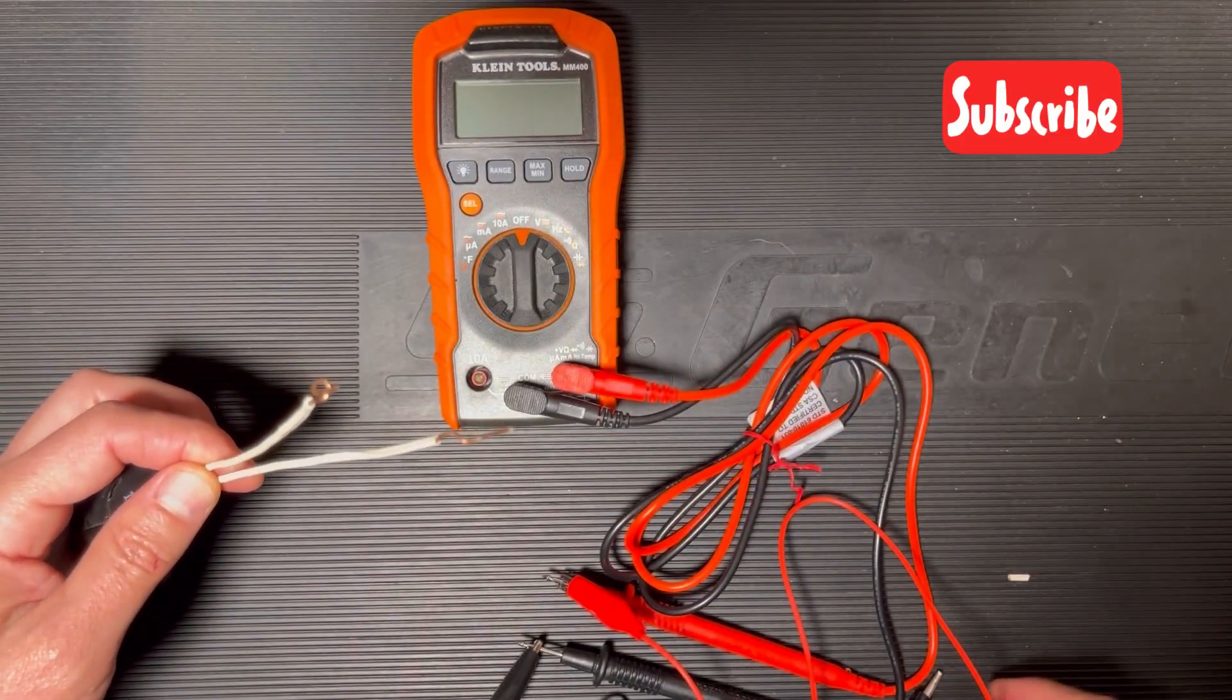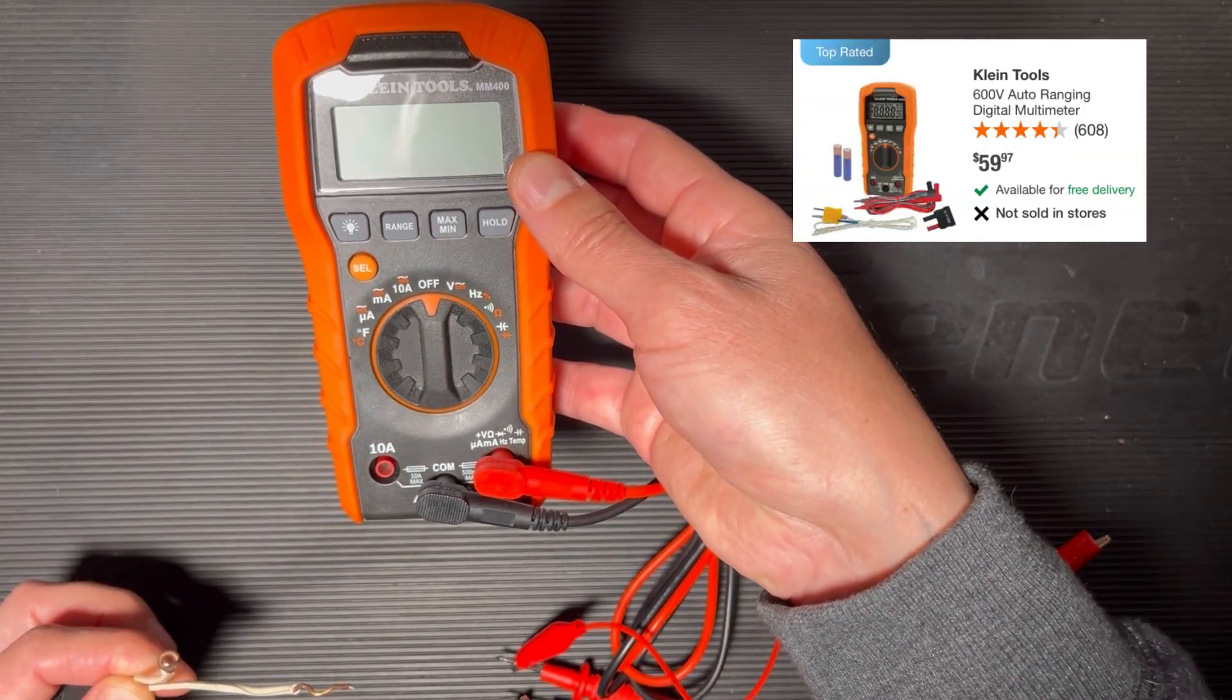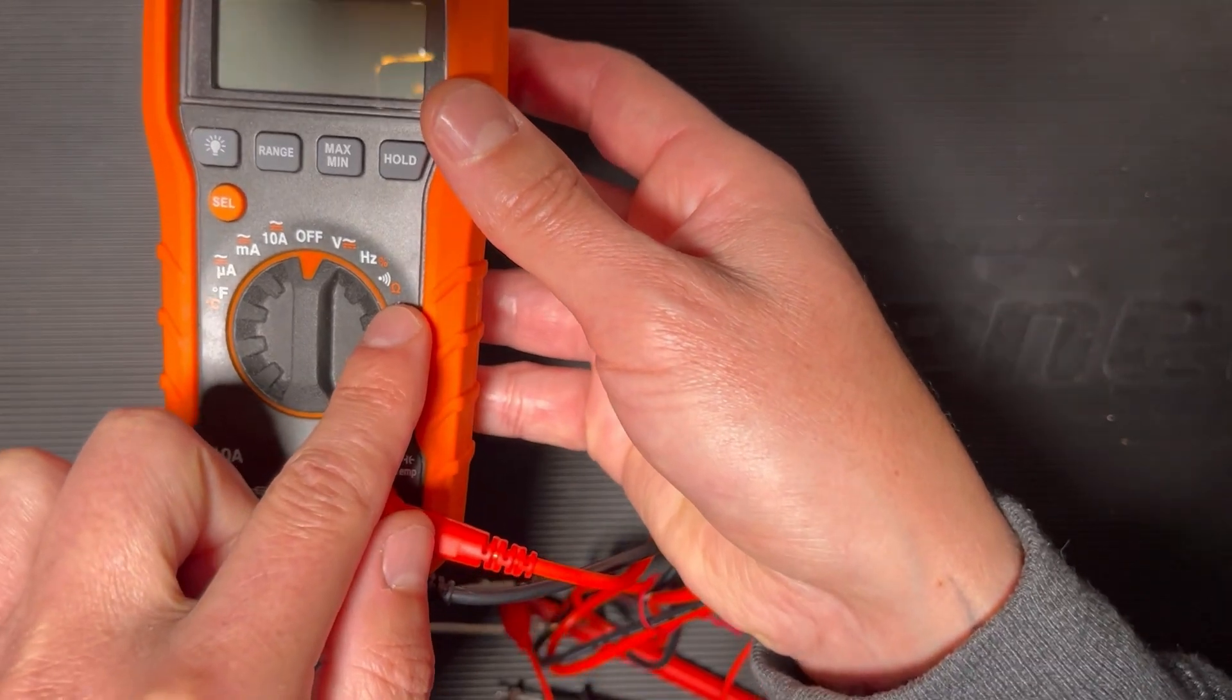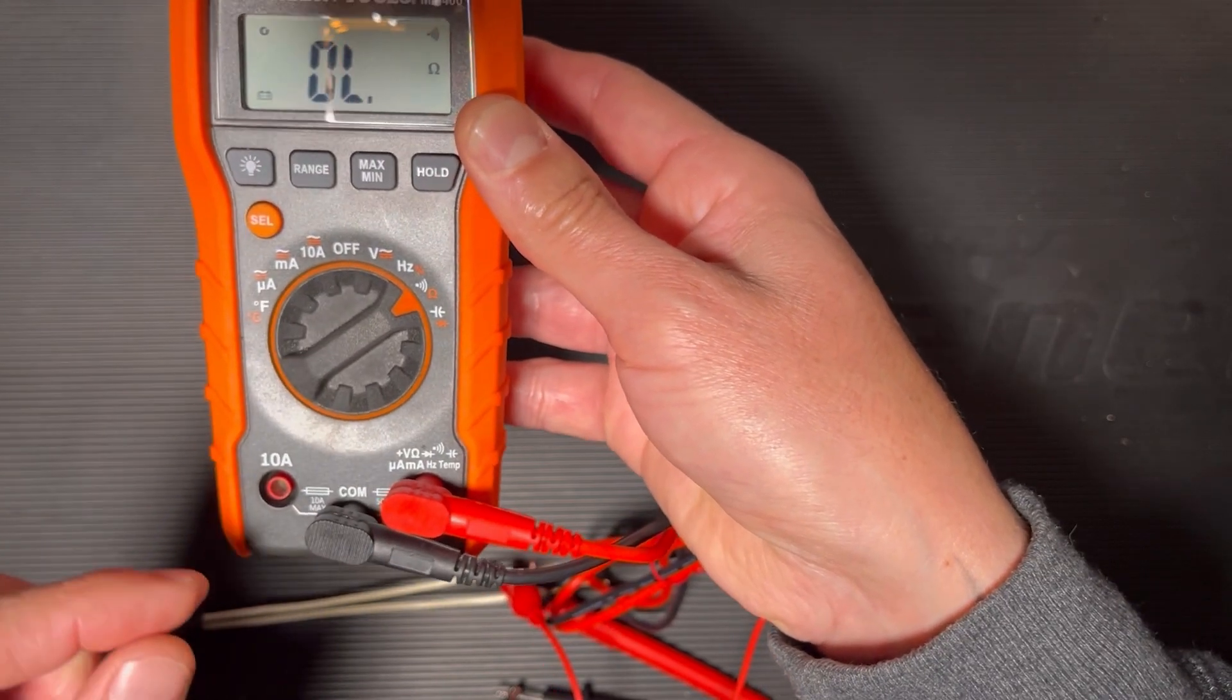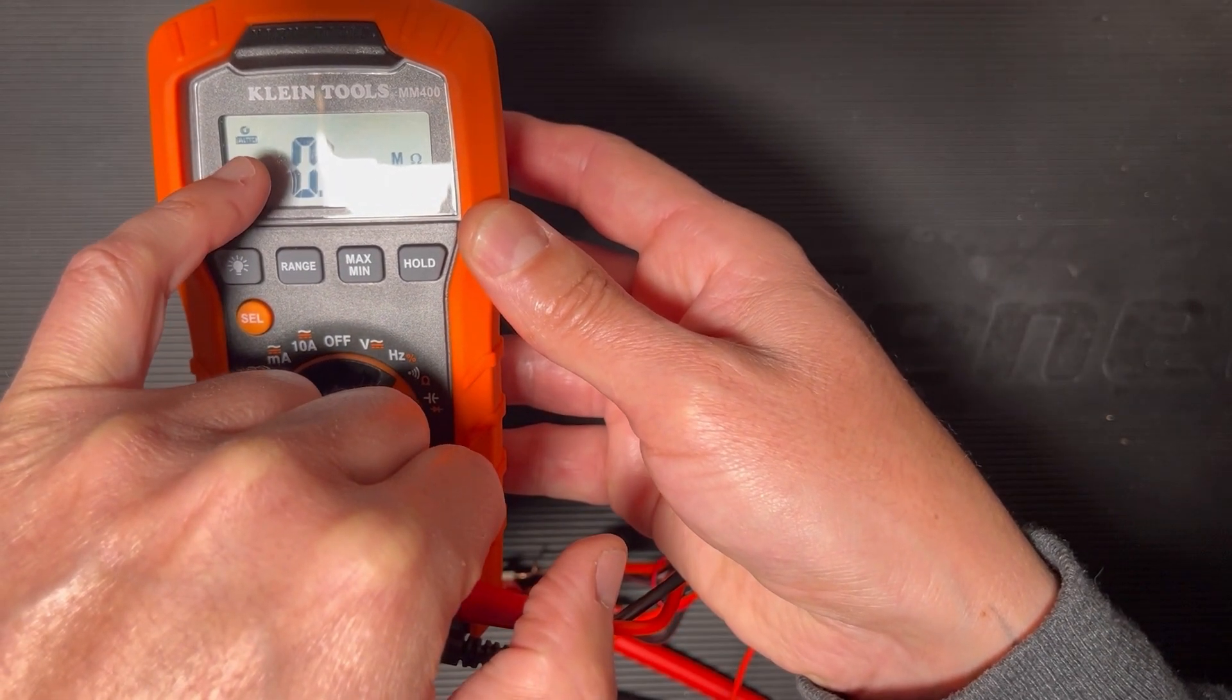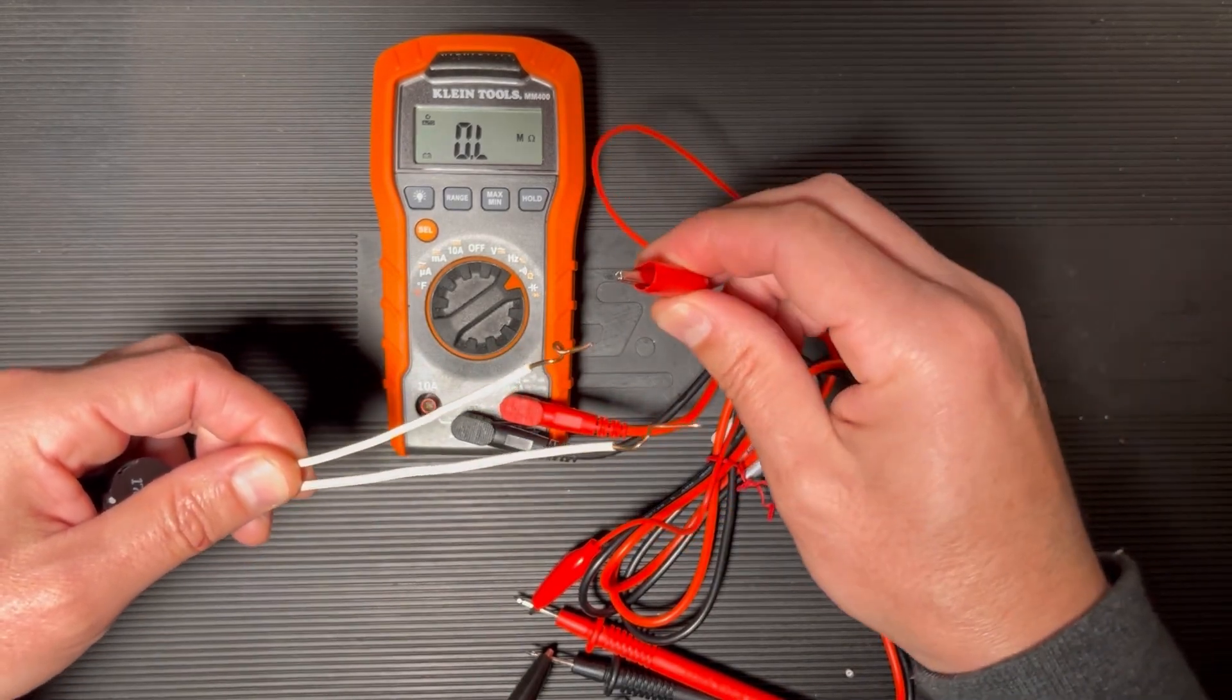Now the multimeter that I'm going to be using is this one. This one is from Home Depot. Okay, let me explain a little bit more. Now it's off. Now we want to go to the Omega symbol right there. One, two, and three - right there is the Omega symbol. Now we want to press here and it's going to auto mode. So now it's auto.